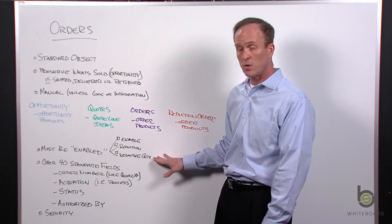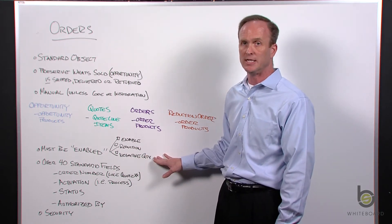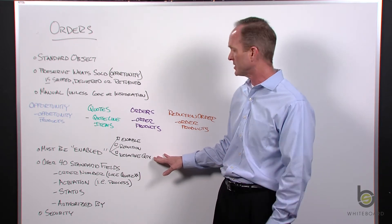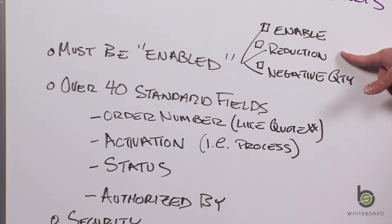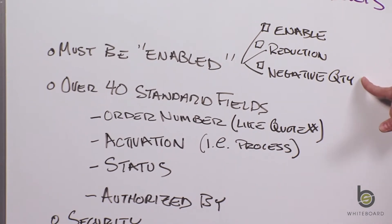You may not see orders out of the box unless you've enabled it. Enabling it is simply a checkbox and then you'll get two other checkboxes: do you also want to have reduction orders, which is negative quantities, and do you want to have negative quantities in your products? Most people do.